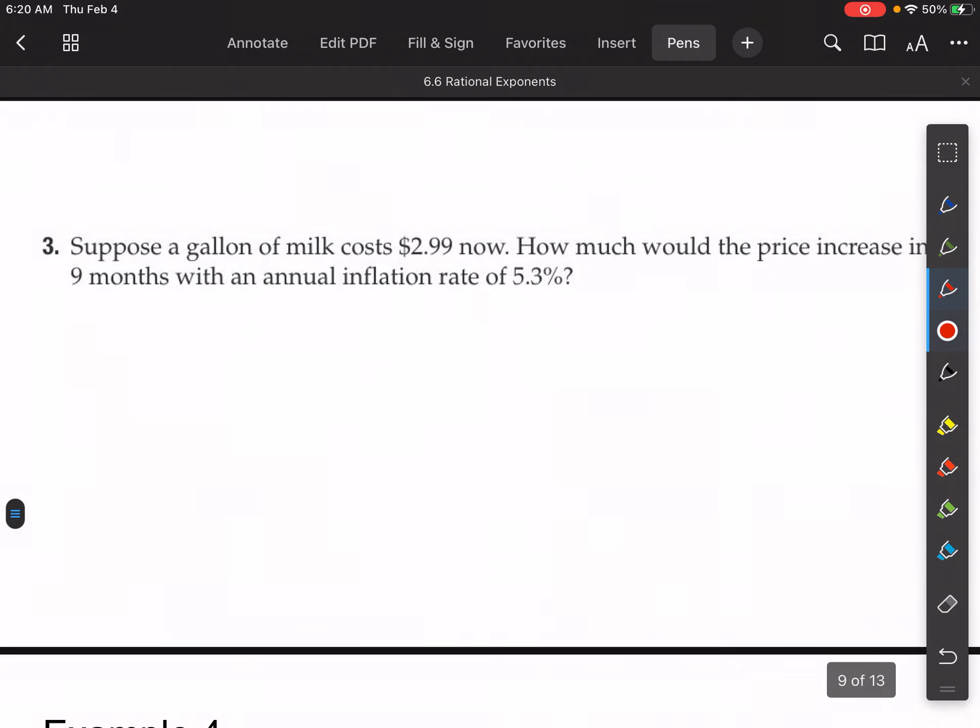So for example three, it says, suppose a gallon of milk costs $2.99 right now. How much would the price increase in nine months with an annual inflation rate of 5.3%? So to figure that out, what I need to do is, I need to, so this is nine months.